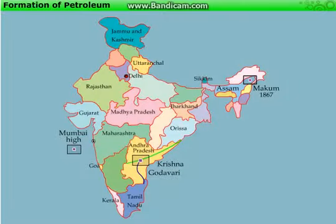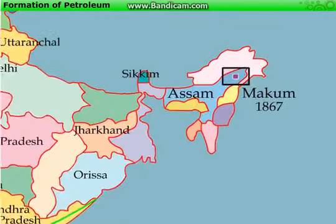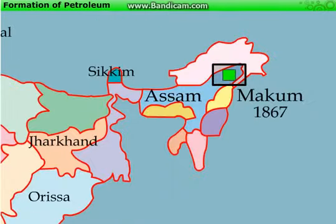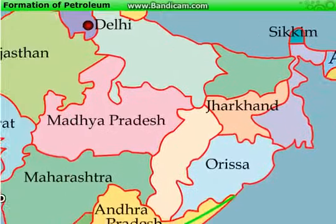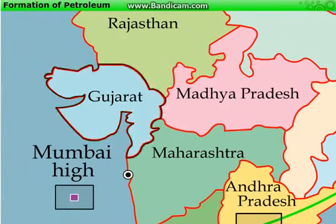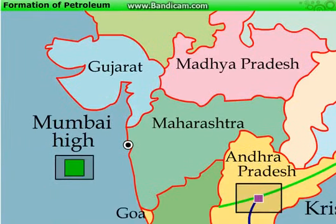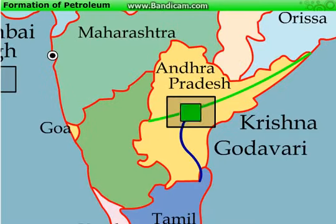About eight years later, that is in 1867, oil was found at Mukum in Assam. In India, oil is also found in Gujarat, Mumbai High, and in the basins of Godavari and Krishna.